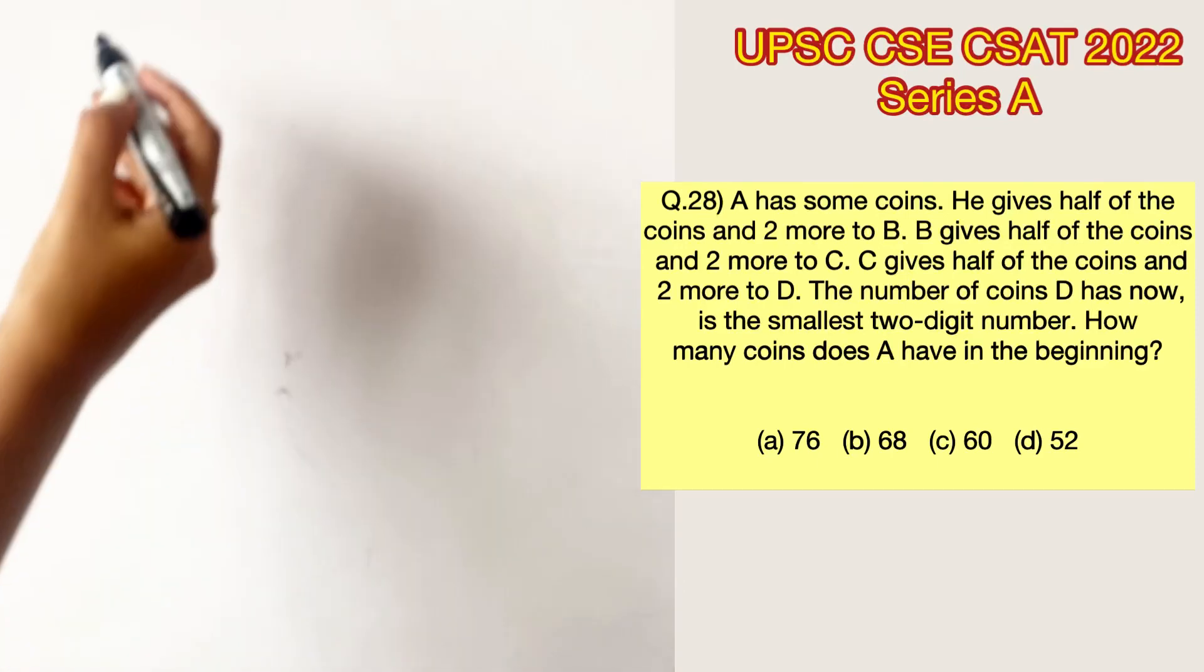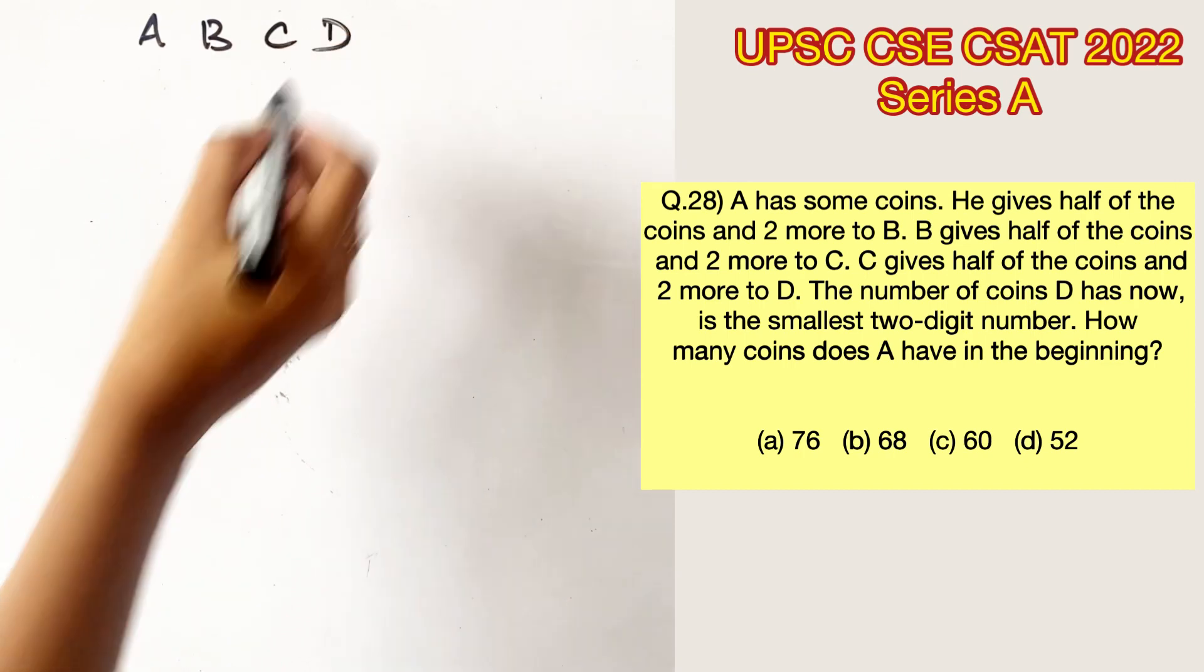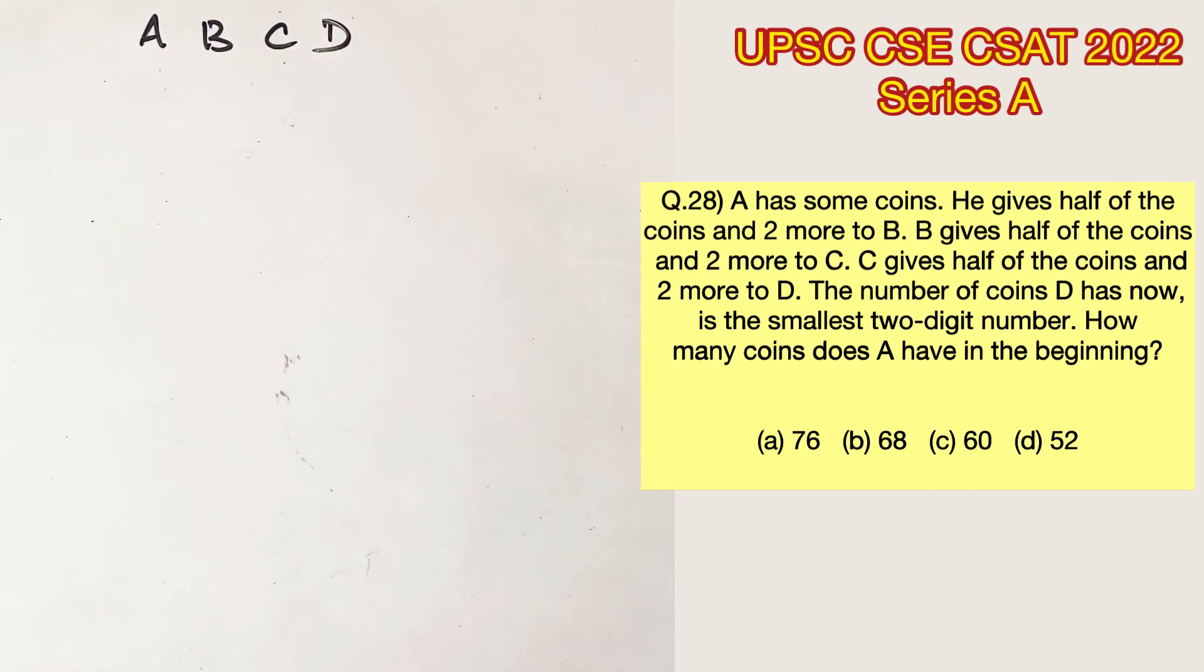Please pause the video and read the question completely. Now, they are saying A has some coins. Let's consider A is the number of coins A has, B is the number of coins B has, and so on.